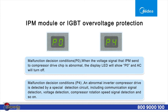Malfunction Decision Conditions, P4: An abnormal inverter compressor drive is detected by a special detection circuit, including communication signal detection, voltage detection, compressor rotation speed signal detection, and so on.